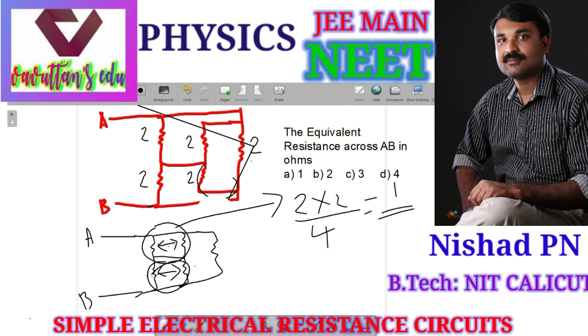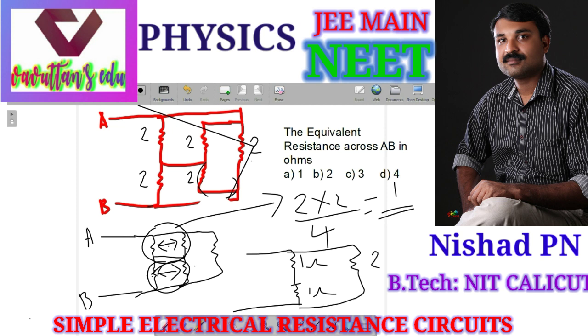We will simplify it further. The equivalent resistance is 1 ohm, then again 1 ohm. Now, we have a parallel resistance of 2 ohm.